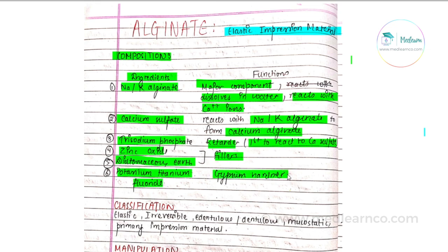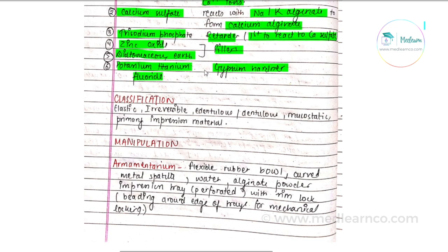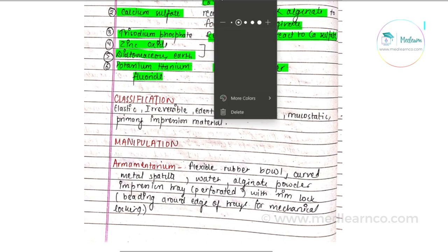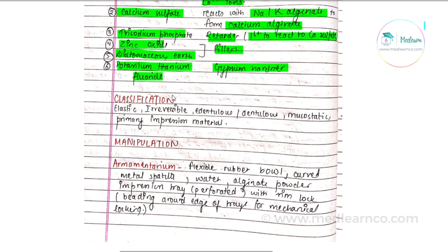Classification: alginate is classified as an elastic impression material. It is further classified as irreversible because once the setting reaction occurs, it cannot be reversed.